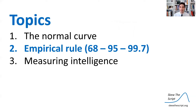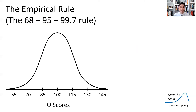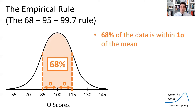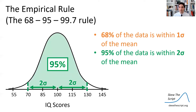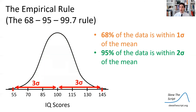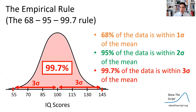The empirical rule states that a normal distribution has a specific share of data within standard deviations of the mean. Within one standard deviation of the mean, you'll find 68% of the data. If you go two standard deviations out — in this case IQ scores from 70 to 130 — you'll find 95% of the data. So in theory, 95% of people have IQ scores between 70 and 130, which is two standard deviations above and below the mean of 100. If you go three standard deviations out, you'll find 99.7% of the data within those bounds.